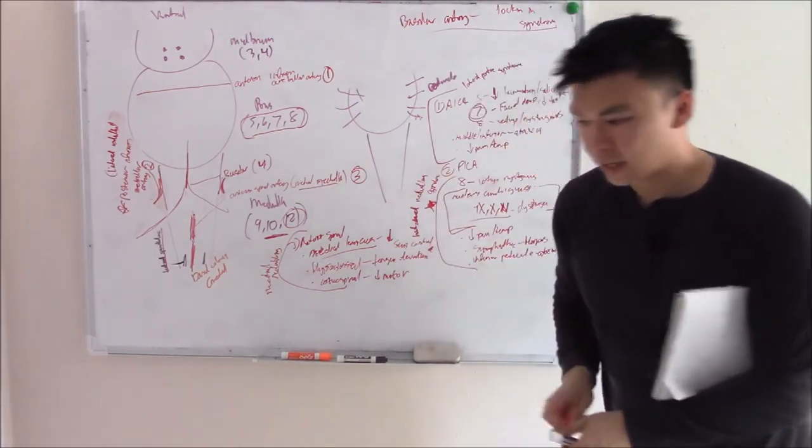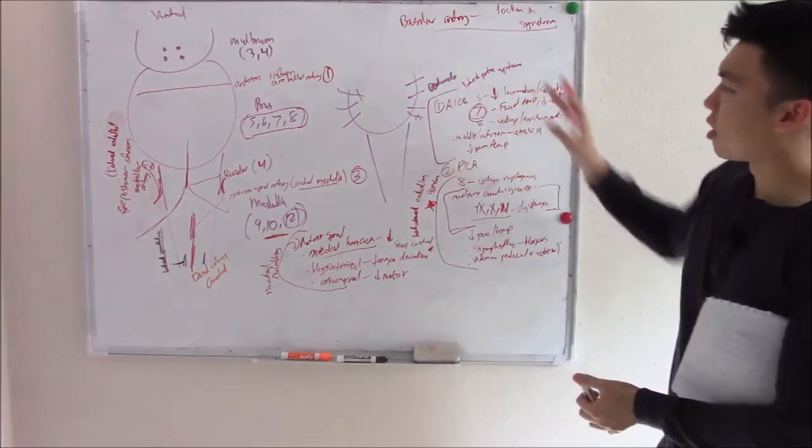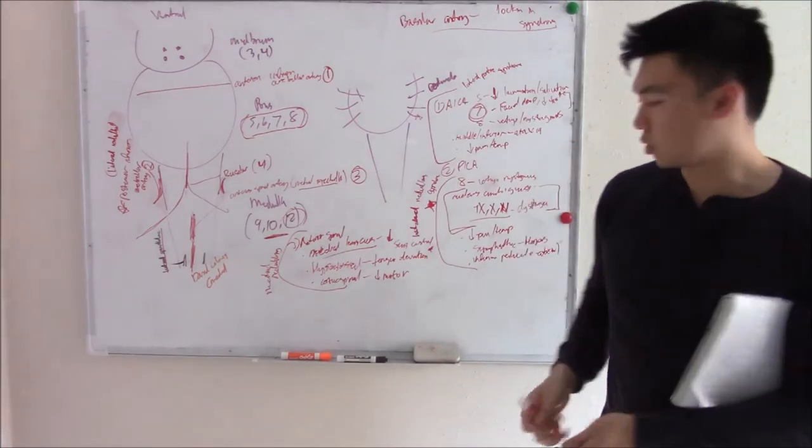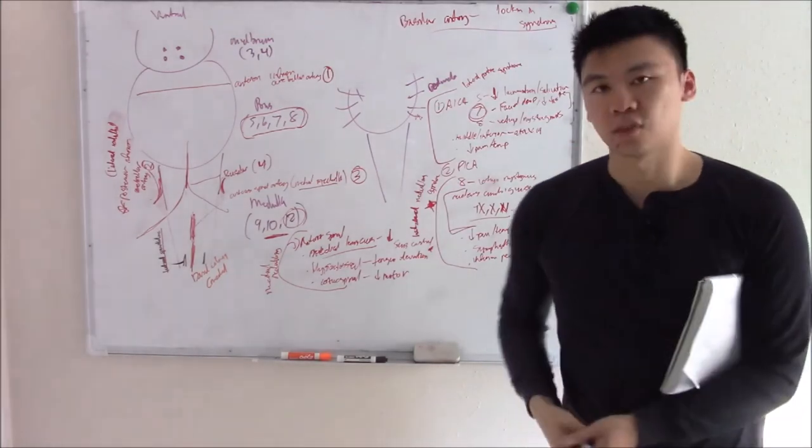That is your brainstem anatomy — the arteries that supply it and what can go wrong. Hope you enjoyed this video.